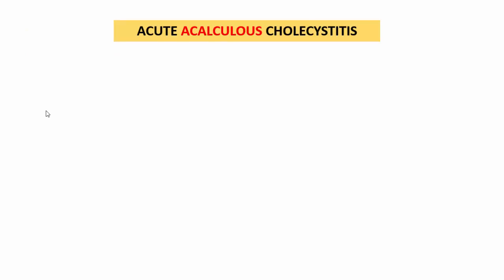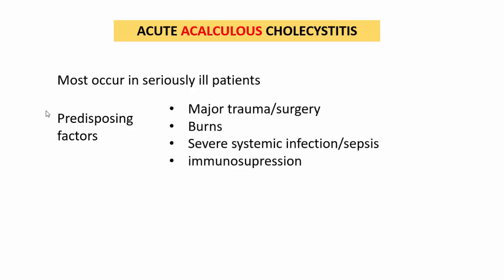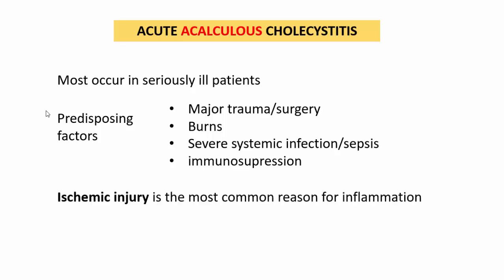In acute acalculus cholecystitis, where stones are absent, this type mostly occurs in very seriously ill patients. Predisposing factors include major trauma, major surgeries, severe burns, severe systemic infection or sepsis, and severely immunosuppressed individuals. Ischemic injury is the most common reason for inflammation, as conditions like major surgery, severe burns, and sepsis can result in hypotension, leading to decreased blood and oxygen supply to the gallbladder, causing hypoxia and subsequent inflammation.